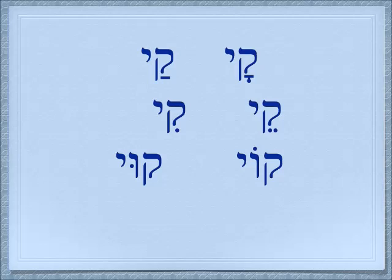Finally, we have the 'u.' If we add the yuh to the 'u,' we get 'ui' — like 'gooey' or 'fooey.' Hebrew's not that hard! 'Kui.' This combination isn't used that much — only in very specific grammatical formations.